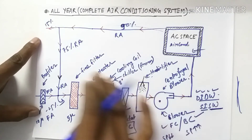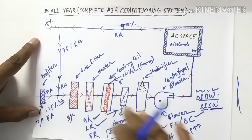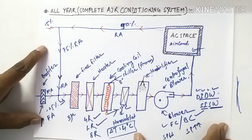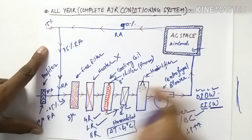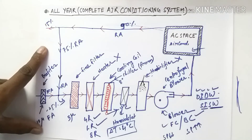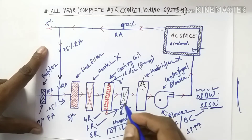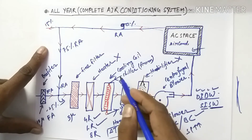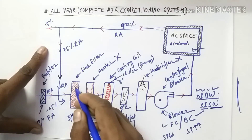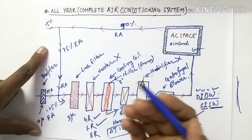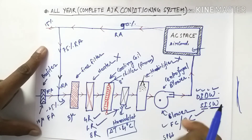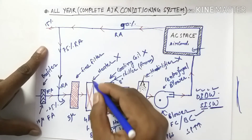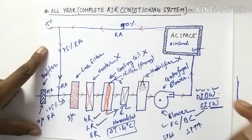If we are using this air conditioning system in summer conditions, then we have to shut off the heater and the humidifier. The blower will be on, the humidistat will be on, and the cooling coil will be on. The pre-filter and fine filter are always available. If we use this in winter conditions, then the cooling coil will be off and the heater will be on, and the humidifier will be on.